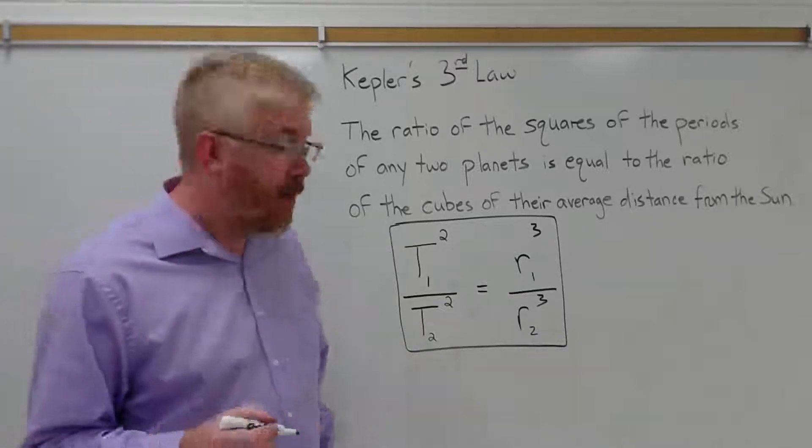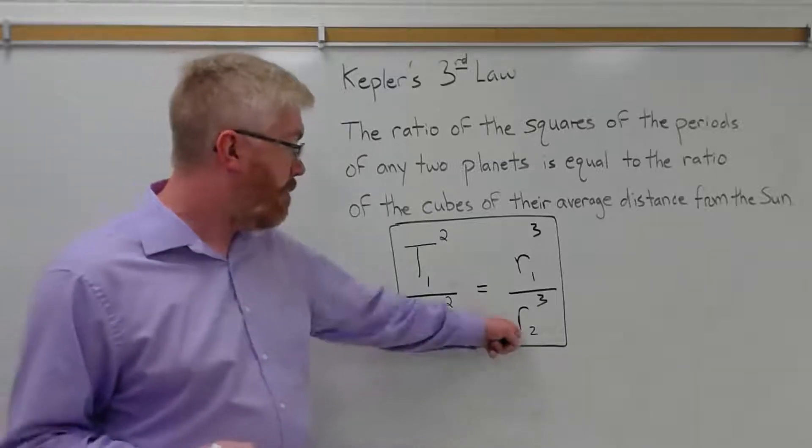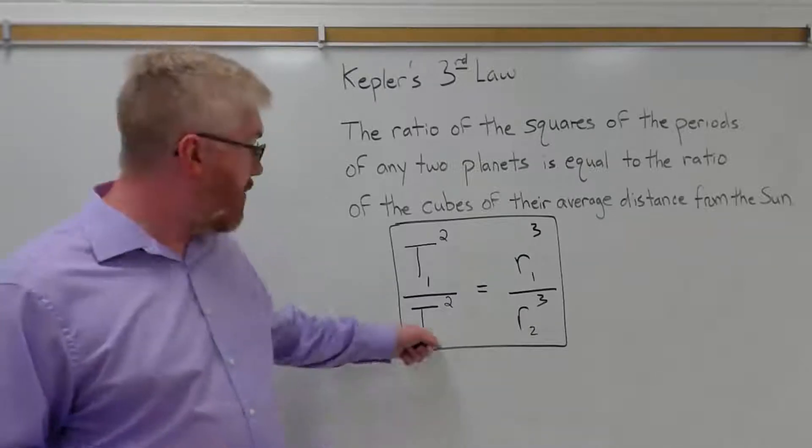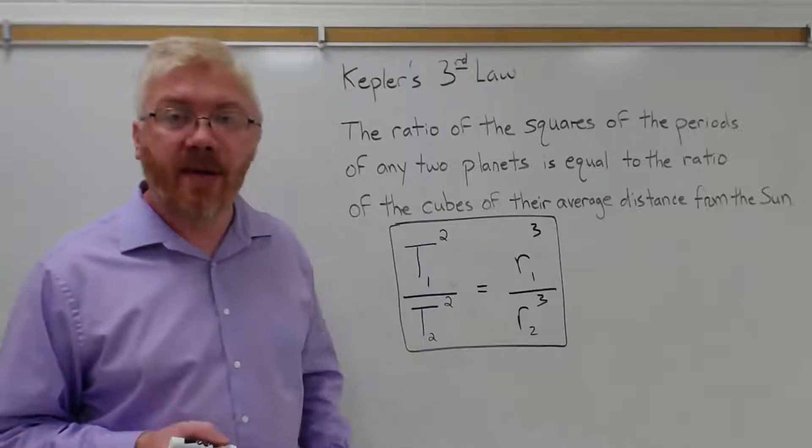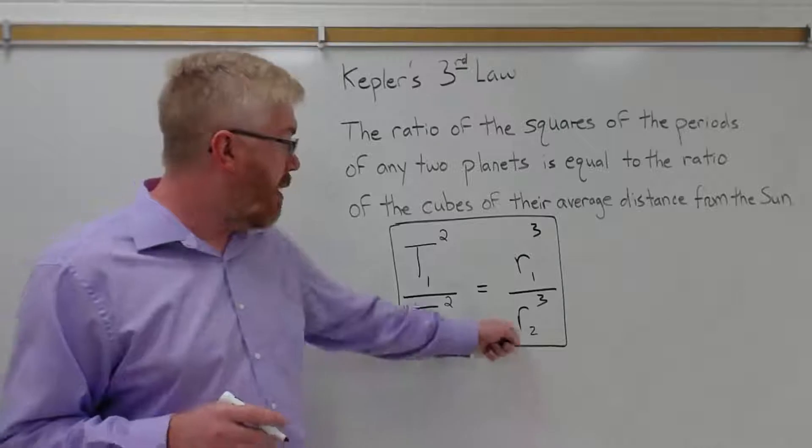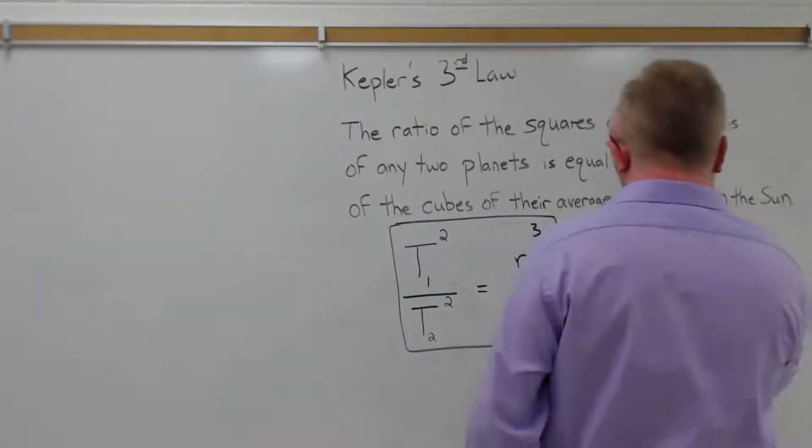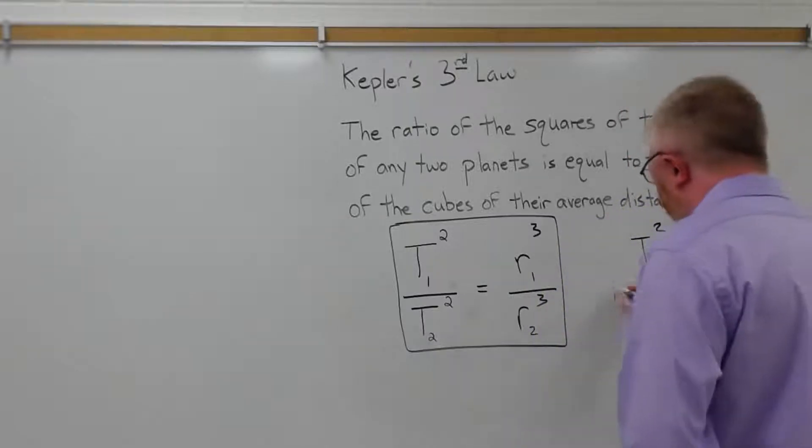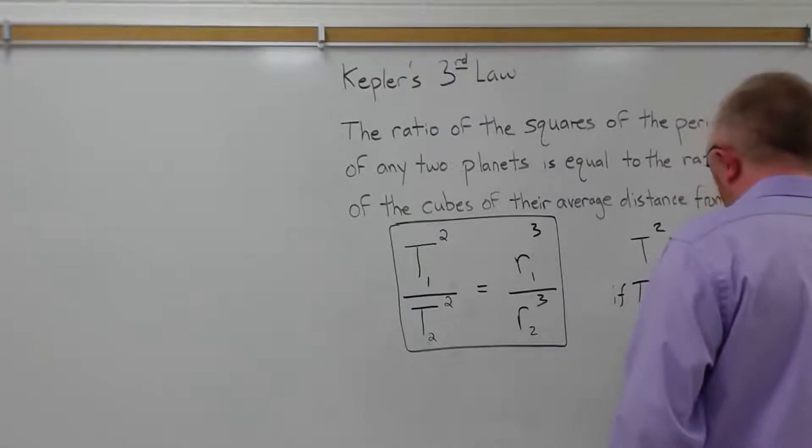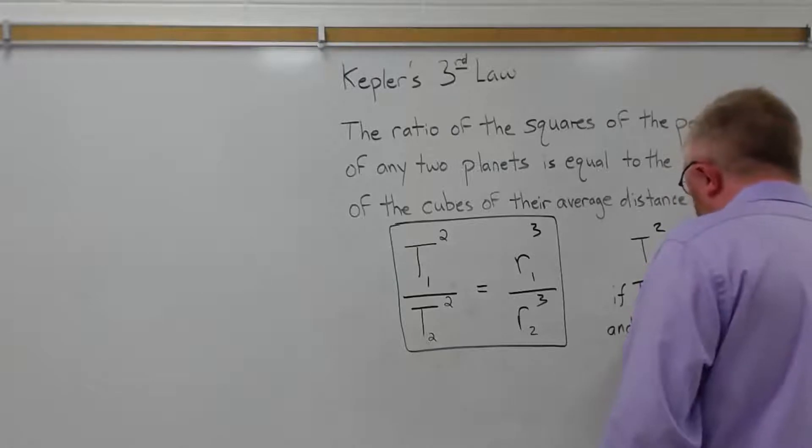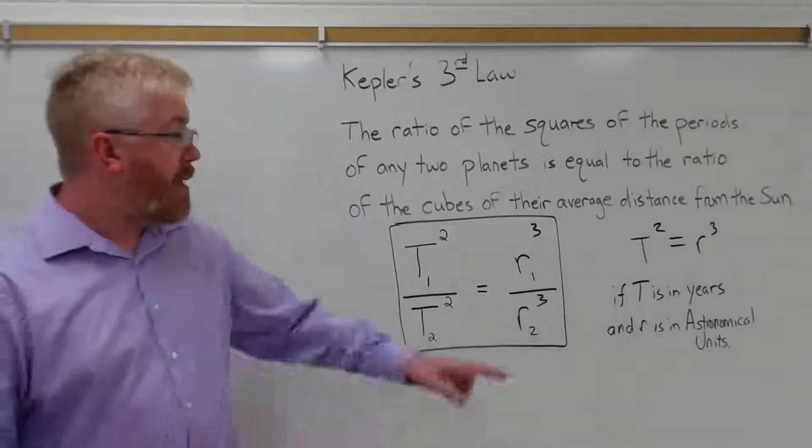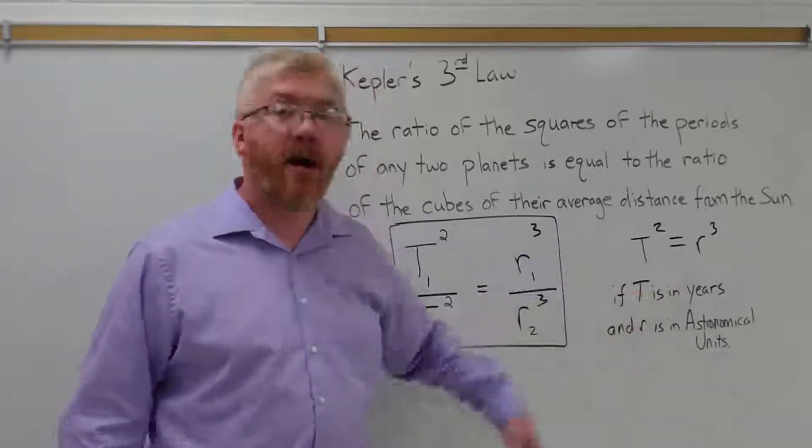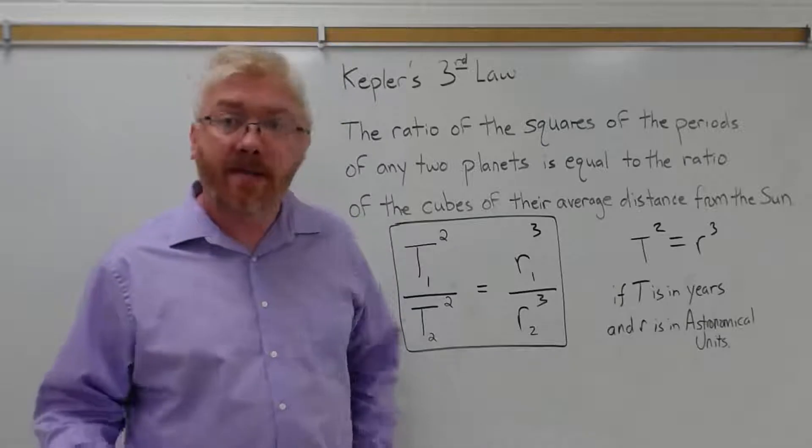Another way of writing this, very simply, if for example we use Earth as planet number two, the period of Earth is one year. One squared is one. The distance from Earth, we're going to call it an astronomical unit. That's the average distance between the Earth and the Sun. One astronomical unit is the distance between the Earth and the Sun. One cubed is one. So another way of writing this is T squared equals R cubed if T is in years and R is in astronomical units. So if you make these measurements, if you measure the planetary orbit in years and the distance R in astronomical units, one astronomical unit is about 93 million miles or 150 million kilometers.